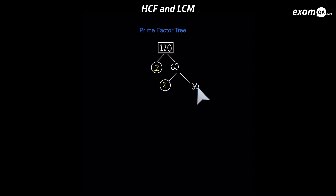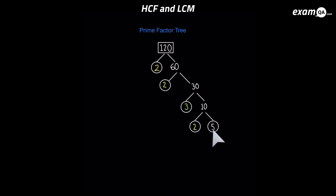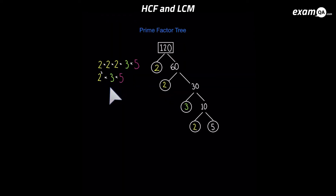Carrying on the 30, I've gone for three times 10. Three is prime so we circle it. For the 10, there's only one combination: five times two — they're both prime and we circle them. We're done. Listing all the prime factors: two times two times two (three twos), one three, and one five. In index form: two cubed times three times five.